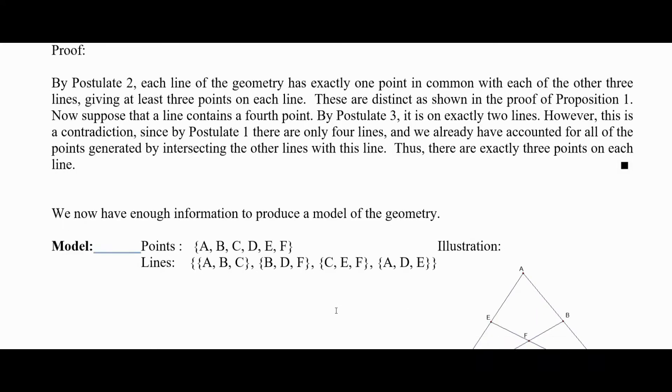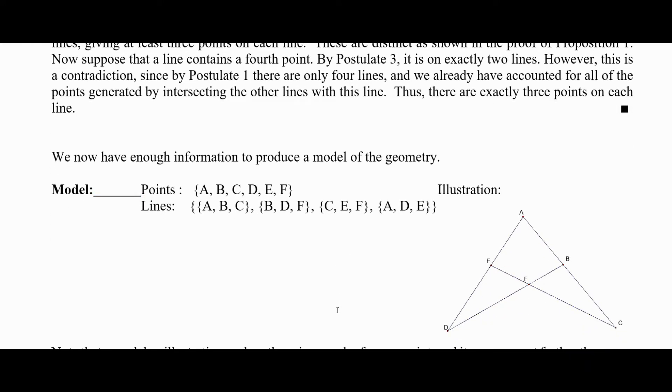Now this is enough to build a model. Here's a model here. There were six points, so let's just call them A, B, C, D, E, and F. The lines, there are four of them, and there are sets of three points. So let's do the sets of three points here. The only way you can make sets of three points A, B, and C.